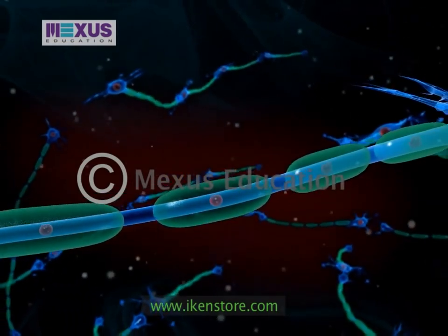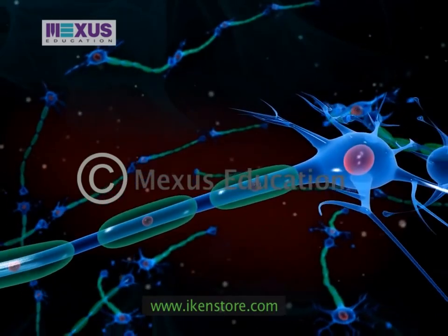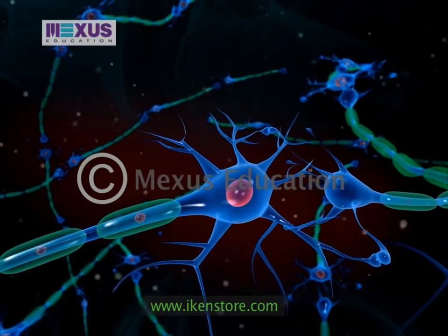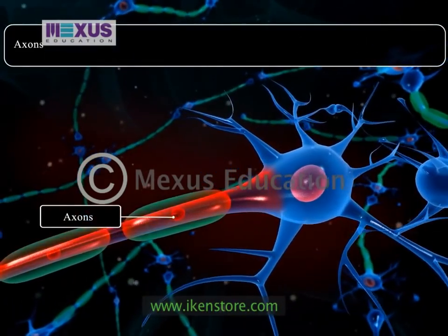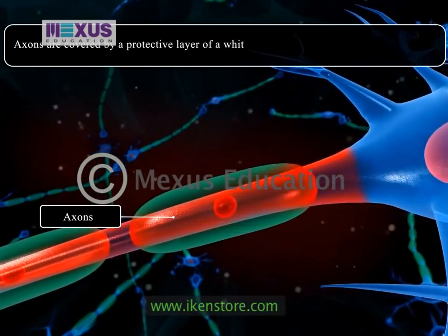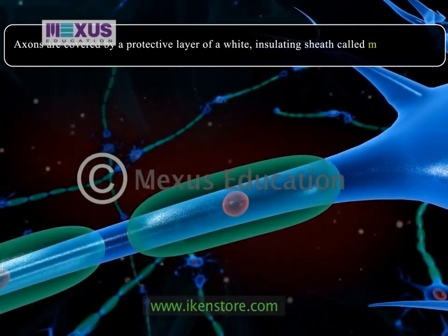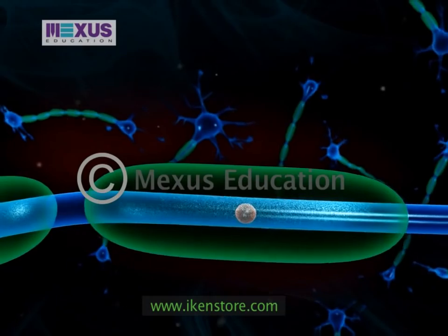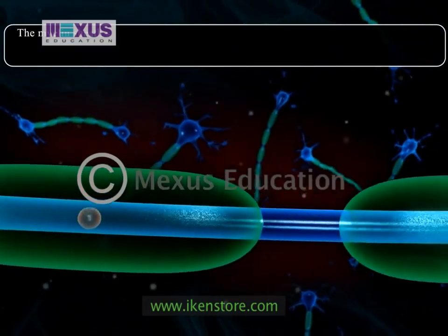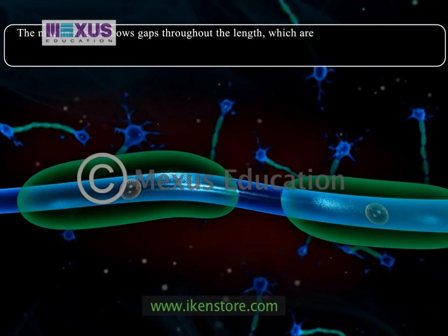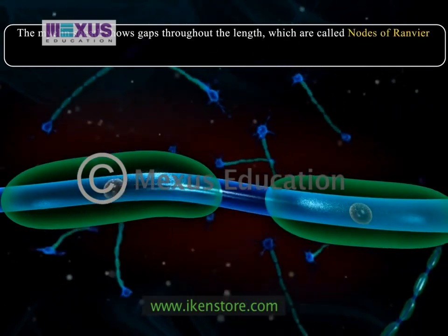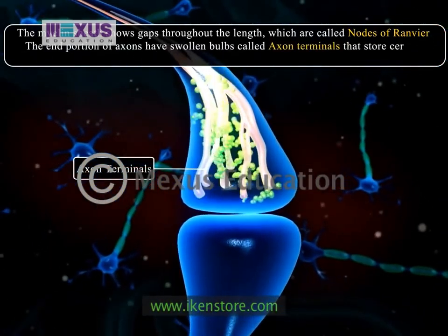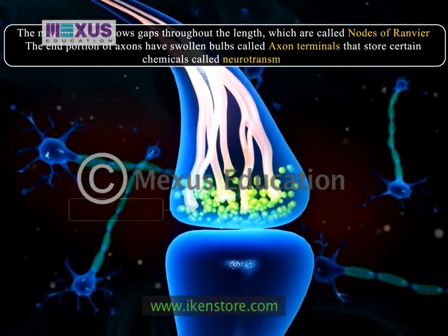An axon of one neuron may have enough branches to make contact with as many as one thousand other neurons. Axons are covered by a protective layer of a white insulating sheet called the myelin sheath. The myelin sheath shows gaps throughout its length which are called nodes of Ranvier. The end portion of axons have swollen bulbs called axon terminals that store certain chemicals called neurotransmitters.